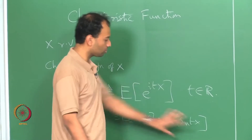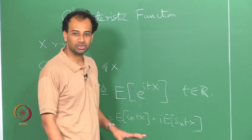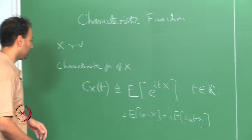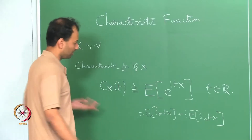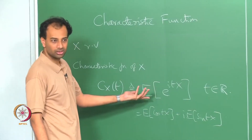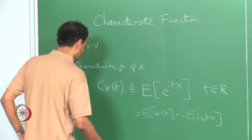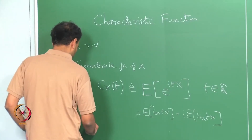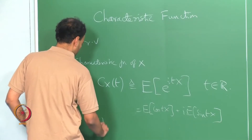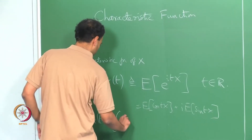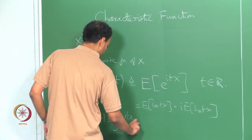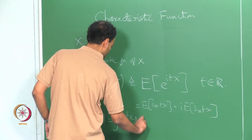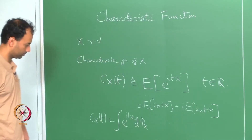These are all real-valued random variables, so that is the definition of a characteristic function. It is defined for any random variable. For any random variable with probability law P_x, c_x(t) is nothing but the integral of e^{itx} dP_x.